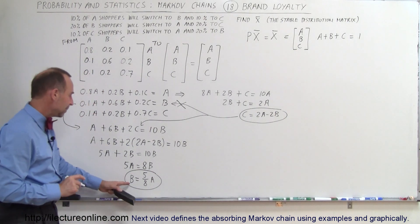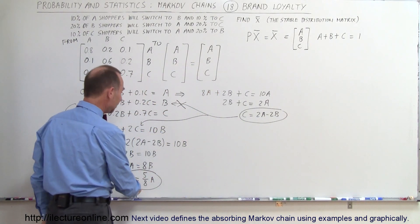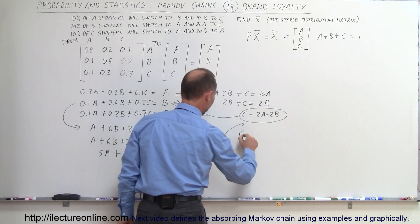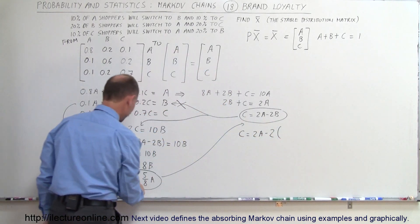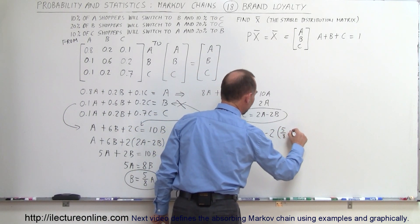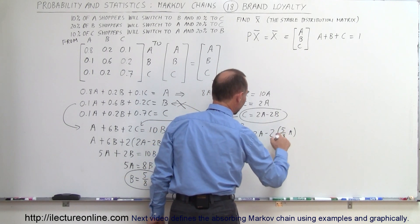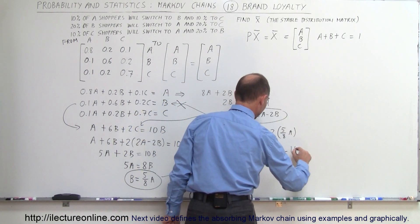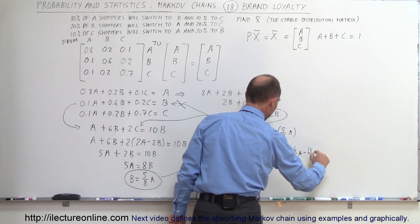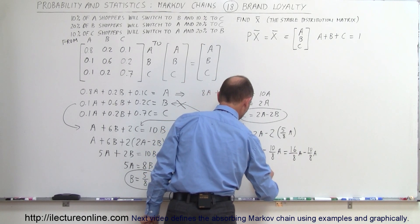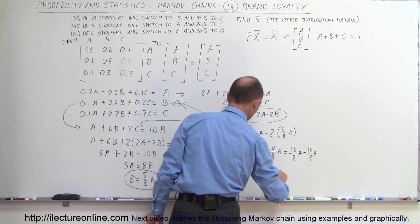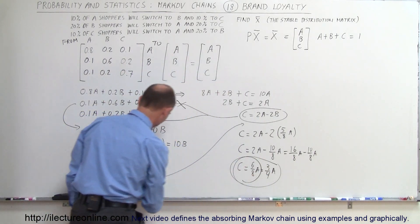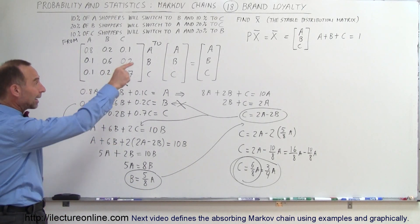Now we have B in terms of A, and C in terms of A and B. Substituting B = (5/8)A into C = 2A − 2B: C = 2A − 2(5/8)A = (16/8)A − (10/8)A = (6/8)A = (3/4)A. So C = (6/8)A.